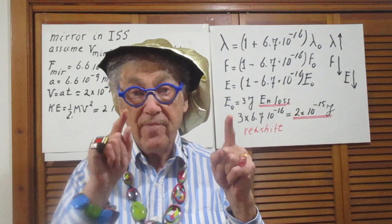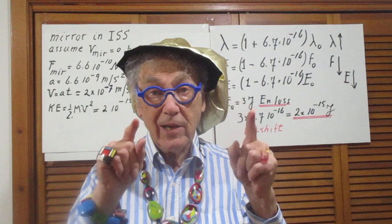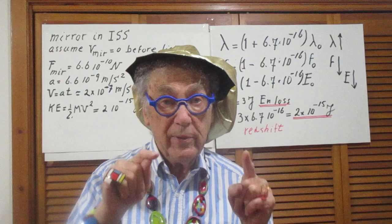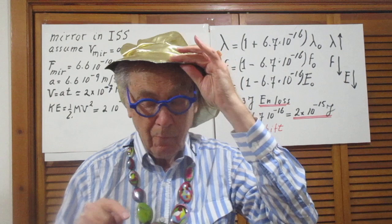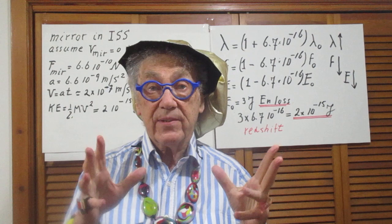If you keep sending photons on it, it will continue to be accelerated because there will be a force on it all the time. Therefore, it will increase its speed. Called solar sail.